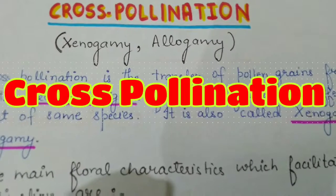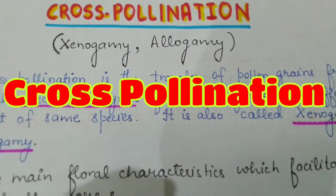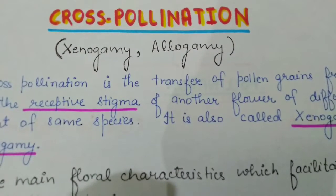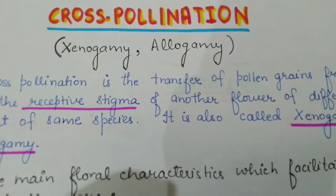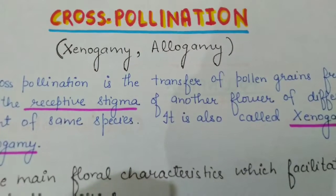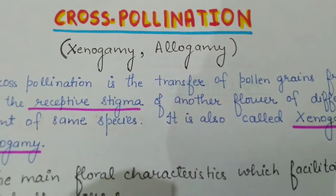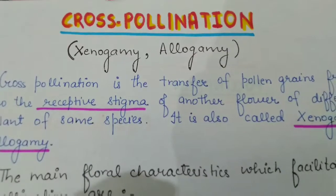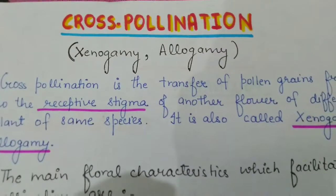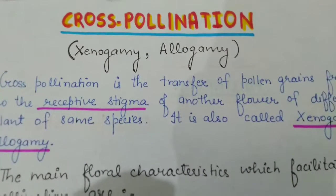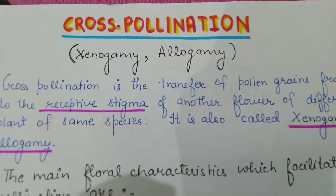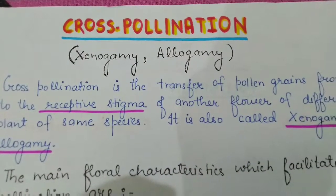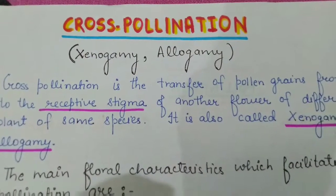Hey friends, in this video we are going to study about cross pollination. In the previous video we studied about self pollination, so we know the basic difference between the two. Cross pollination is the transfer of pollen from the anther to the receptive stigma of another flower. The two flowers are from two different plants of the same species.